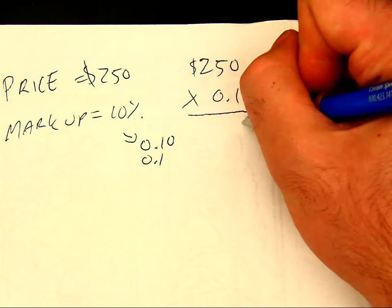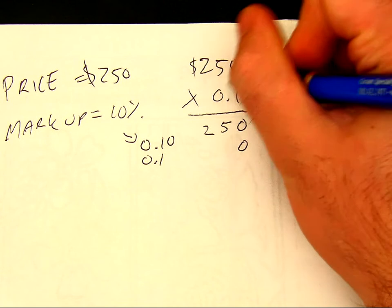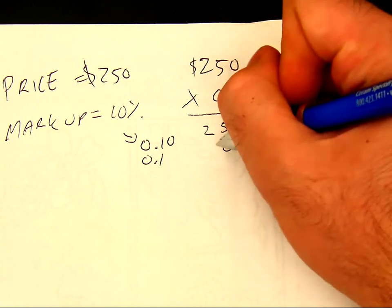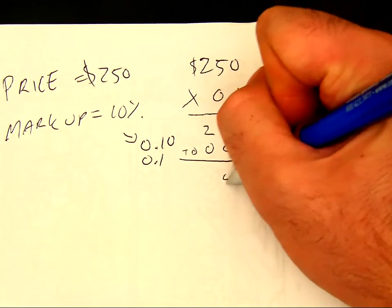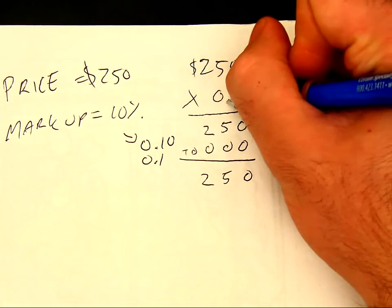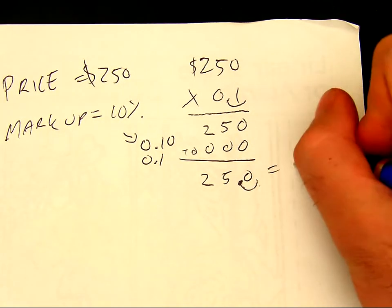1 times 0 is 0. 1 times 5 is 5. 1 times 2 is 2. 0. 0 times 0 is 0. 0 times 5 is 0. 0 times 2 is 0. Add them up. I have $250. I have one decimal place, so I moved over one decimal place. So my markup is going to be $25.